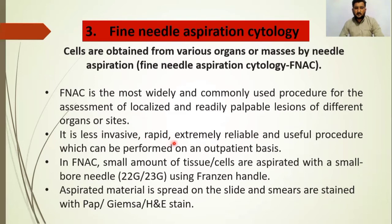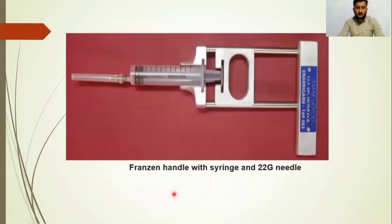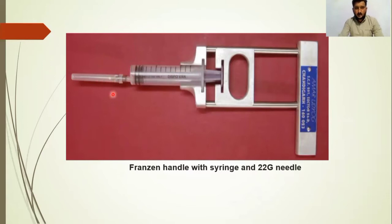FNAC is a less invasive, rapid, extremely reliable, and useful procedure which can be performed on an outpatient basis. A small amount of tissue cells are aspirated with a small-bore needle — 22 to 23 gauge — using a Franzen handle. The aspirated material is spread on a slide as a smear and stained with Papanicolaou stain, Giemsa stain, or hematoxylin and eosin stain. In this diagram you can see the Franzen handle with syringe and 22-gauge needle.